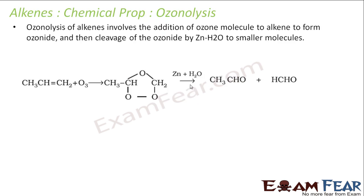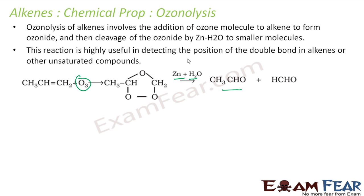Ozonolysis involves addition of ozone molecules to alkenes to form ozonide, and then using zinc and H2O you break this to form aldehyde, small molecules. This is very helpful in detecting the position of double bond.